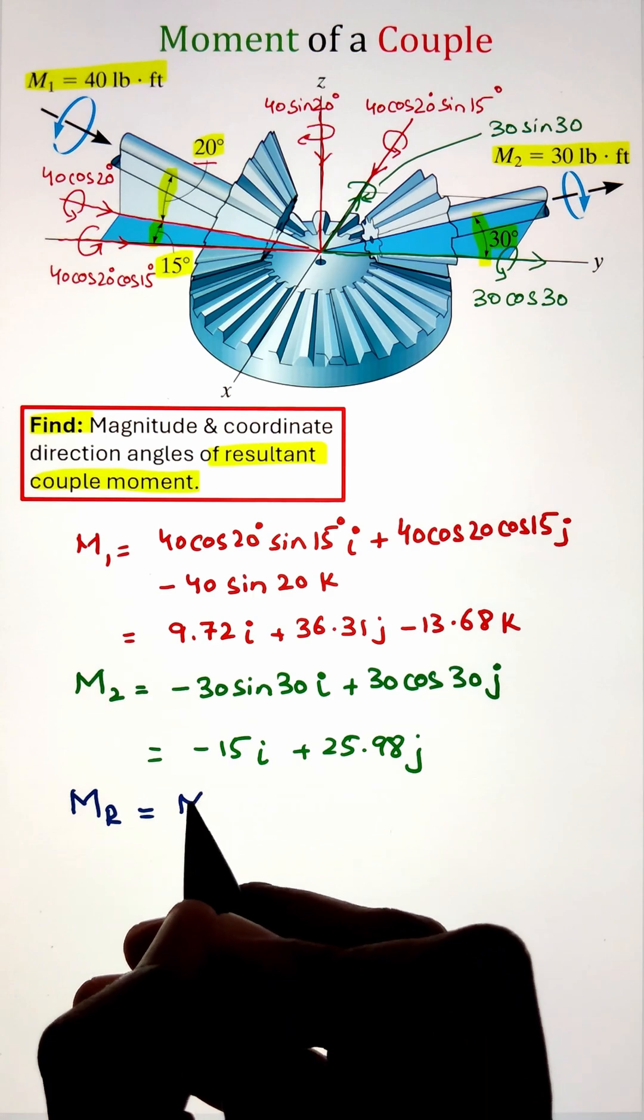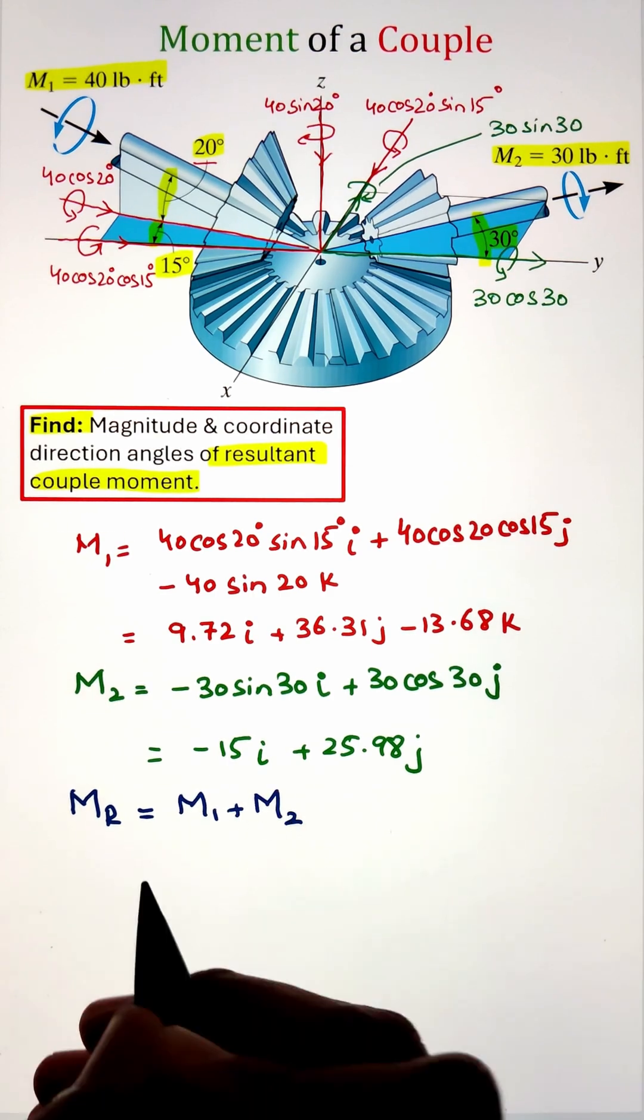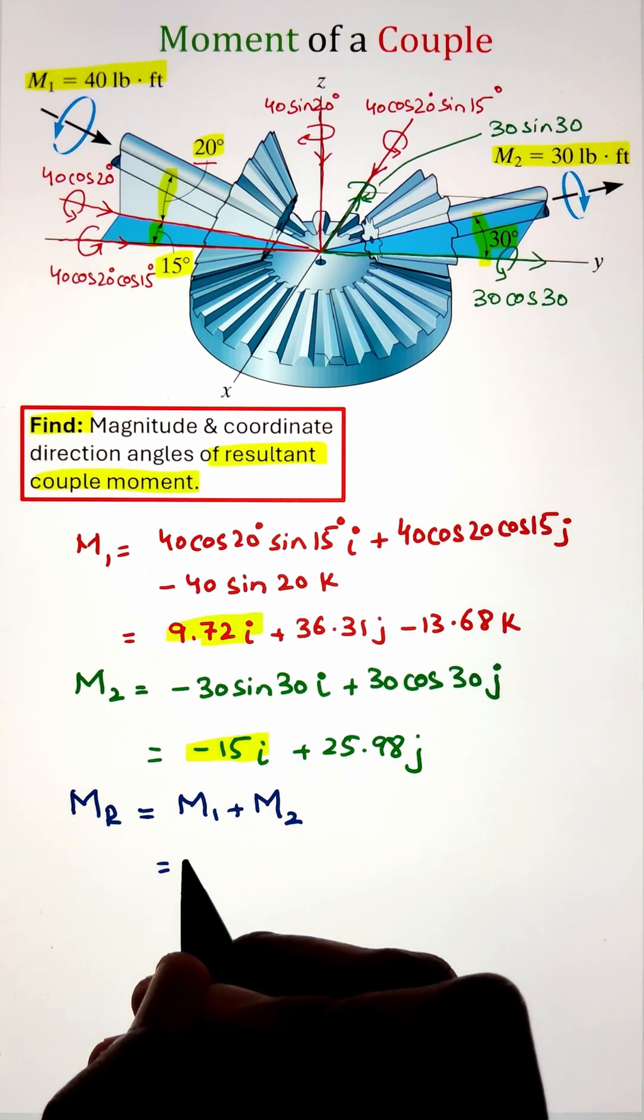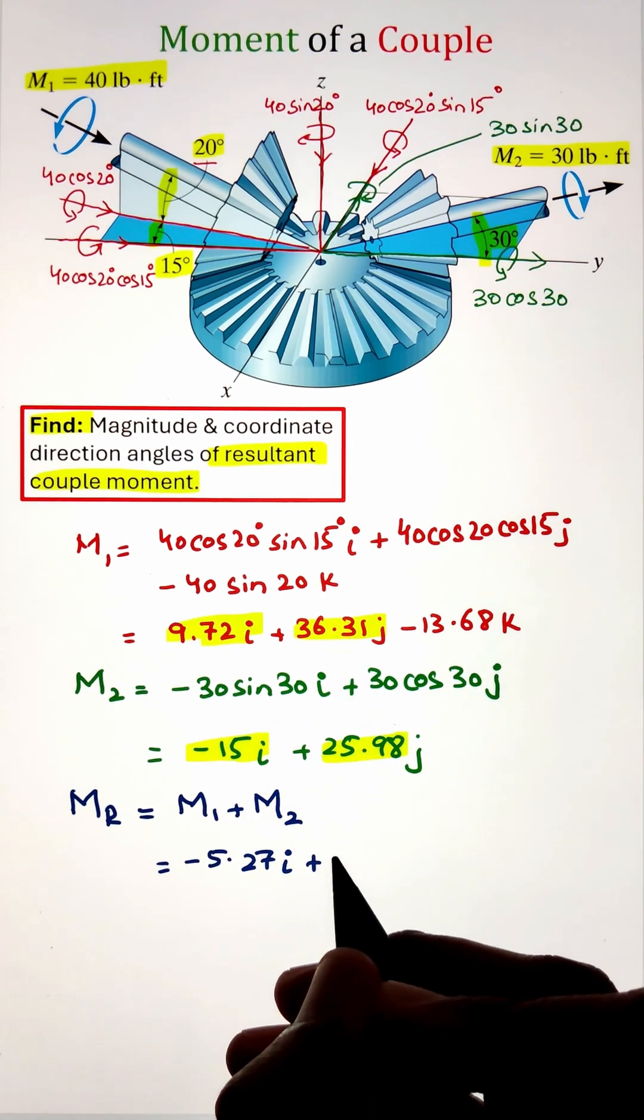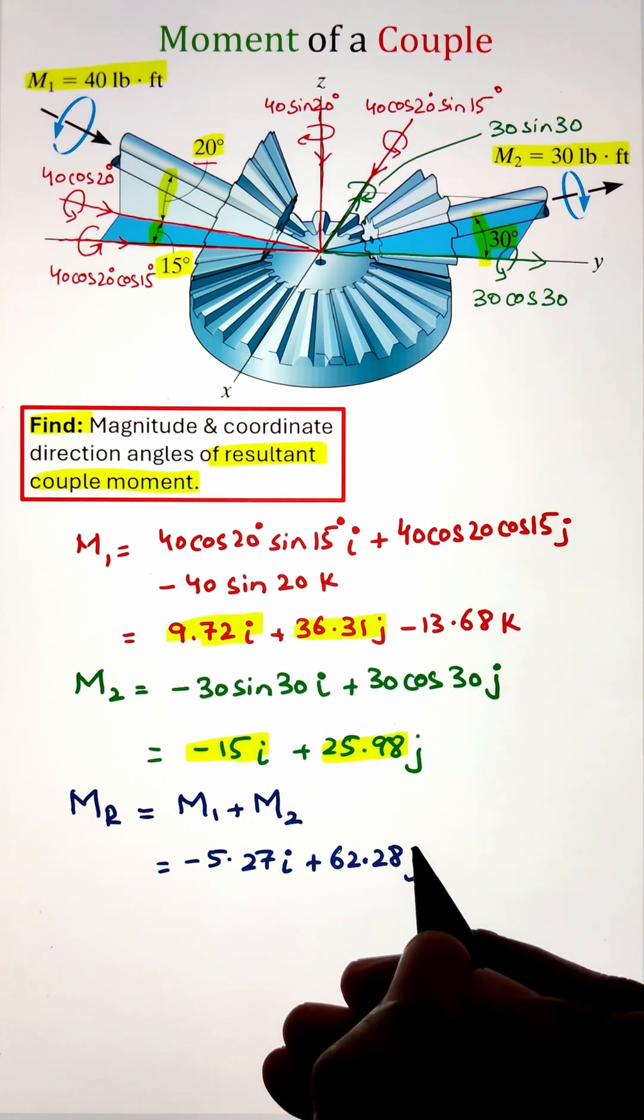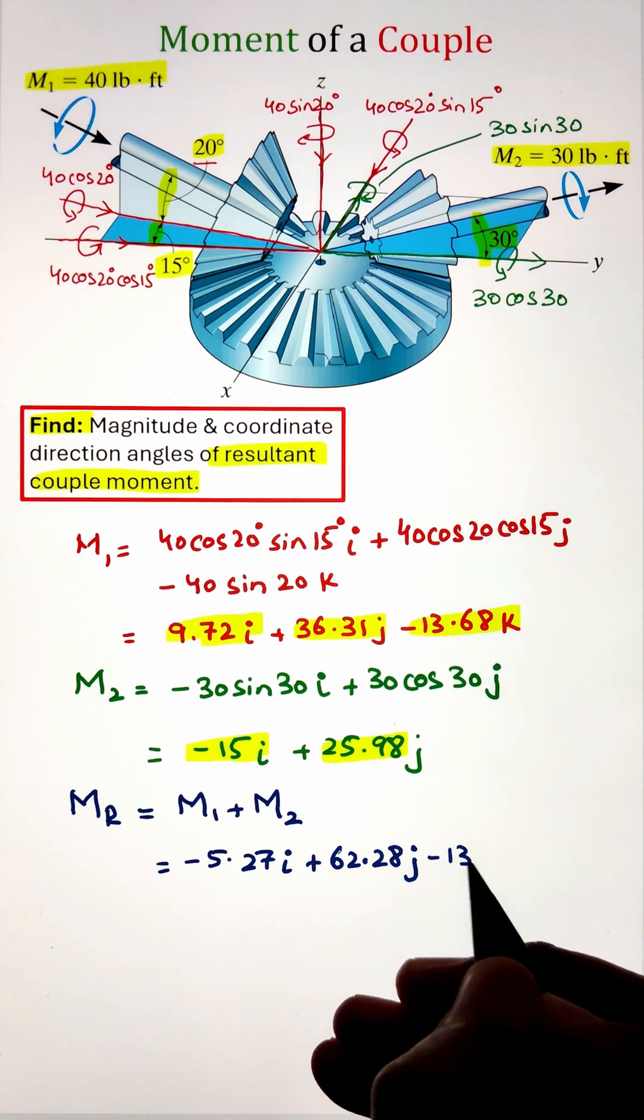Now, to figure out the resultant couple moment, we are just going to add them together. So i component will be added with the i component, j component is added with the j component, and k added with the k component, giving us our resultant couple moment in the Cartesian form.